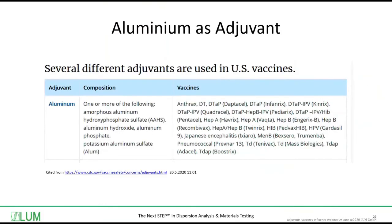Coming to adjuvants — there are very many on the market. Because the case study is related to aluminum-based formulations, I have cited here from a website about the possibilities of aluminum as an adjuvant. As we can see, it may be in different chemical compositions like hydroxyphosphate sulfate, like hydroxide, like phosphate, or like potassium aluminum sulfate, and it forms a part of very different vaccines against very many diseases.